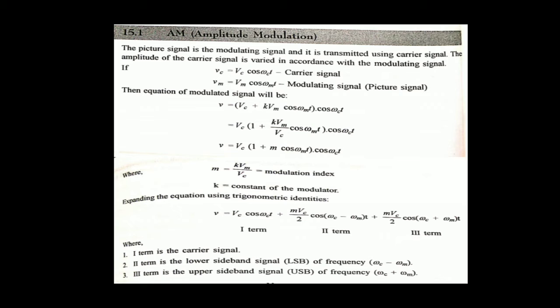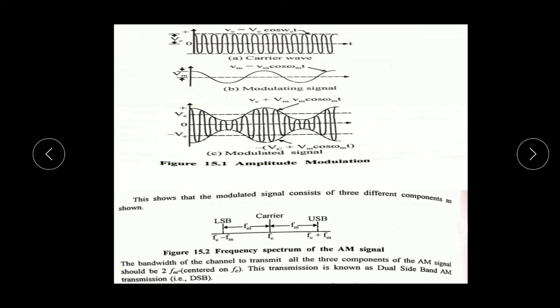The equation of the modulated signal will be V equals (Vc + K·Vm·cos(omega-m · t)) multiplied by cos(omega-c · t). This simplifies to V equals Vc · (1 + m·cos(omega-m · t)) · cos(omega-c · t). Expanding using trigonometric identities gives three terms: Term 1 is the carrier signal, Term 2 is the lower sideband signal at (Vc minus Vm), and Term 3 is the upper sideband signal at (Vc plus Vm). The bandwidth of the channel to transmit all three components of the AM signal should be 2·Fm. This transmission is known as dual sideband AM transmission.